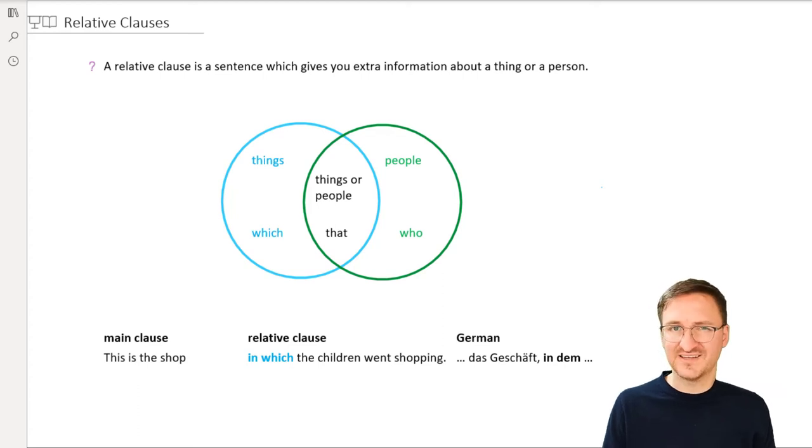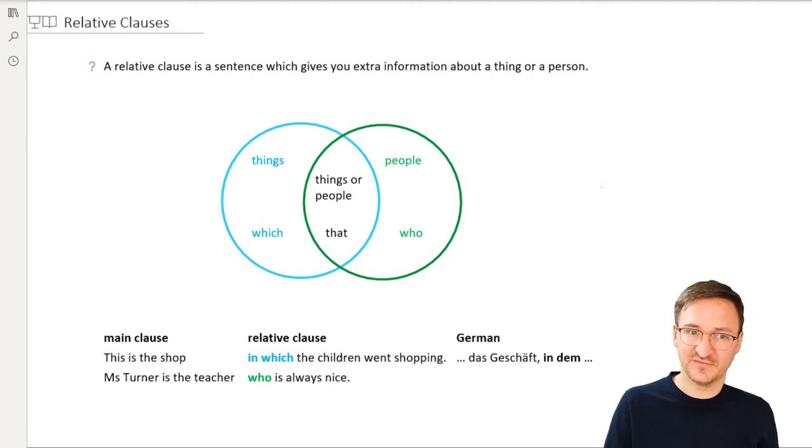Let's take a look at another example. Mrs. Turner is the teacher. We're talking about a person. We can't use which. No, no. Let's go for a relative pronoun which or that we can use for a person. Who is always nice. Everybody knows Mrs. Turner. She is always nice. Die Lehrerin. Die in German.